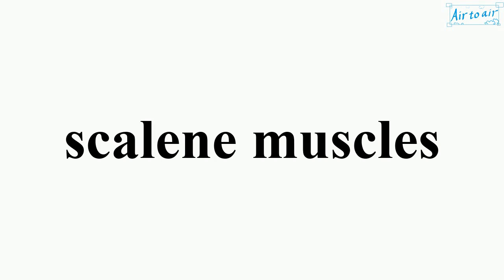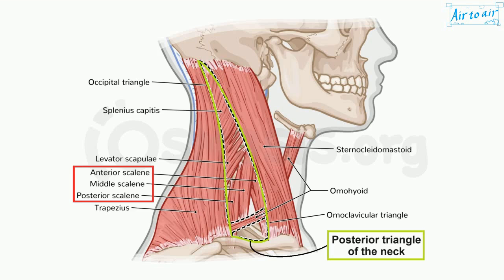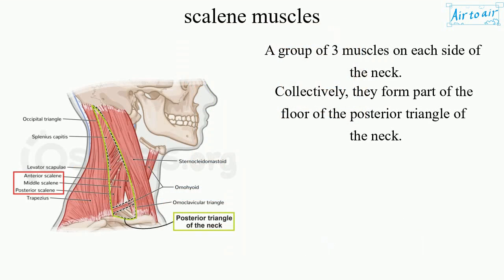Scalene Muscles. A group of three muscles on each side of the neck. Collectively, they form part of the floor of the posterior triangle of the neck.